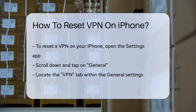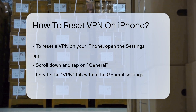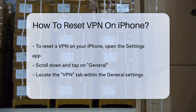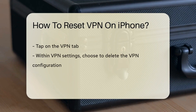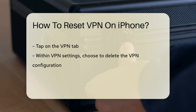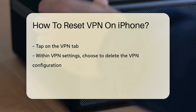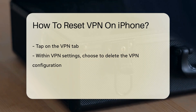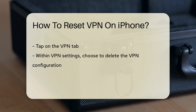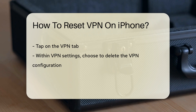Once you've found the VPN tab, tap on it. Within the VPN settings, you will see the option to either disconnect or delete the VPN configuration. To reset the VPN, tap on the option to delete the VPN configuration. Confirm the action if prompted. This will remove the existing VPN settings from your iPhone.